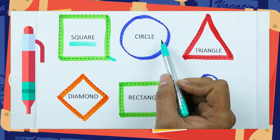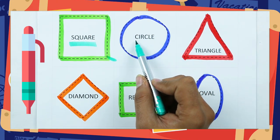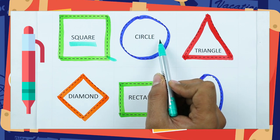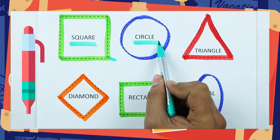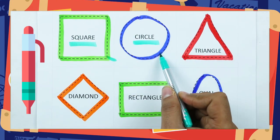Which shape is this? Circle. C-I-R-C-L-E. It's a circle, with blue color.